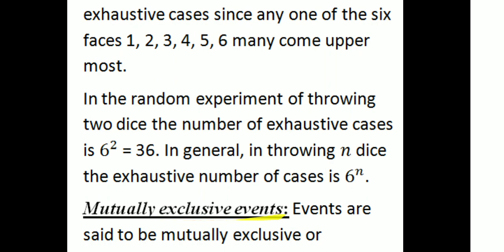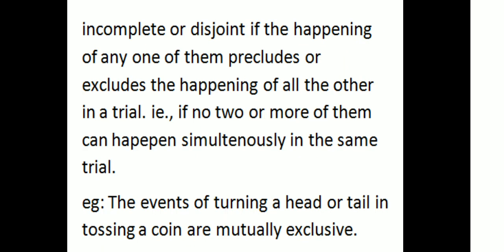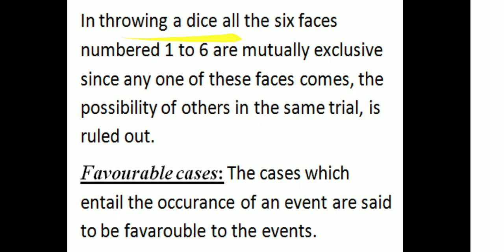Mutually exclusive events: events are said to be mutually exclusive, or incompatible, or disjoint, if the happening of any one of them precludes or excludes the happening of all the others in a trial — that is, no two or more of them can happen simultaneously in the same trial. For example, getting a head or tail in tossing a coin are mutually exclusive. In throwing a die, all six faces numbered 1 to 6 are mutually exclusive, since when any one face comes up, the possibility of others in the same trial is ruled out.